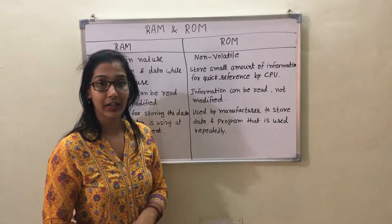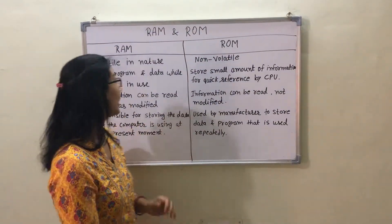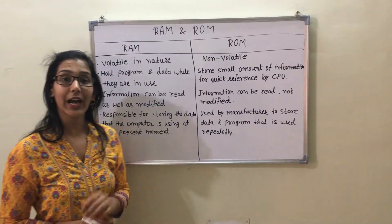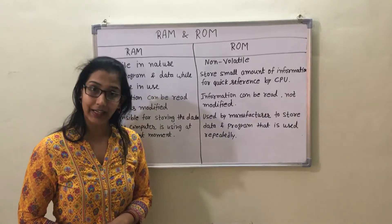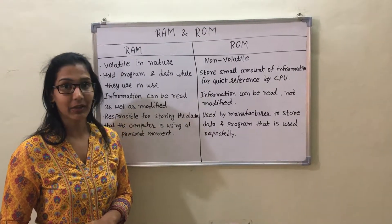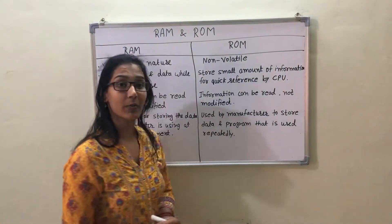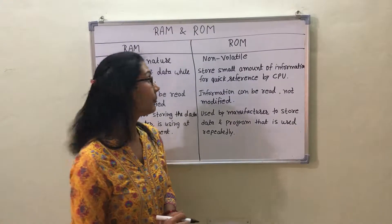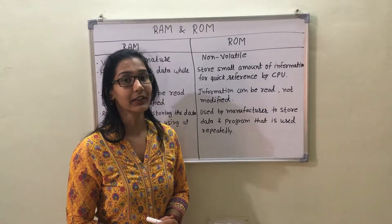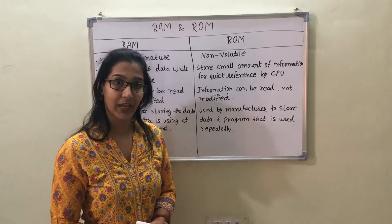RAM has two types: static memory and dynamic memory. While ROM has PROM, EPROM, and EEPROM. Thank you.